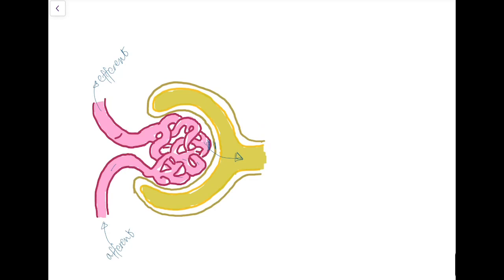The glomerulus contains an endothelium with pores. These pores allow passage of solutes and proteins into the Bowman's capsule, but block red blood cell passage. The Bowman's capsule has podocytes, which prevent the passage of plasma proteins.